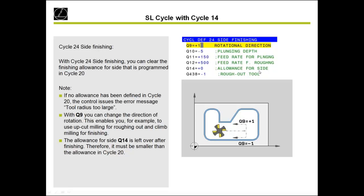In cycle 24, the allowance for side — what you program here — stays on the surface after finishing, so normally we leave it at zero. Q438 is for the roughing tool: you tell the control which tool number was used for roughing, and it looks up the radius in the tool table. This is important when you have a sharp corner — if you roughed with a diameter 16 tool and finish with diameter 5, the finishing tool can reach further into the corner.